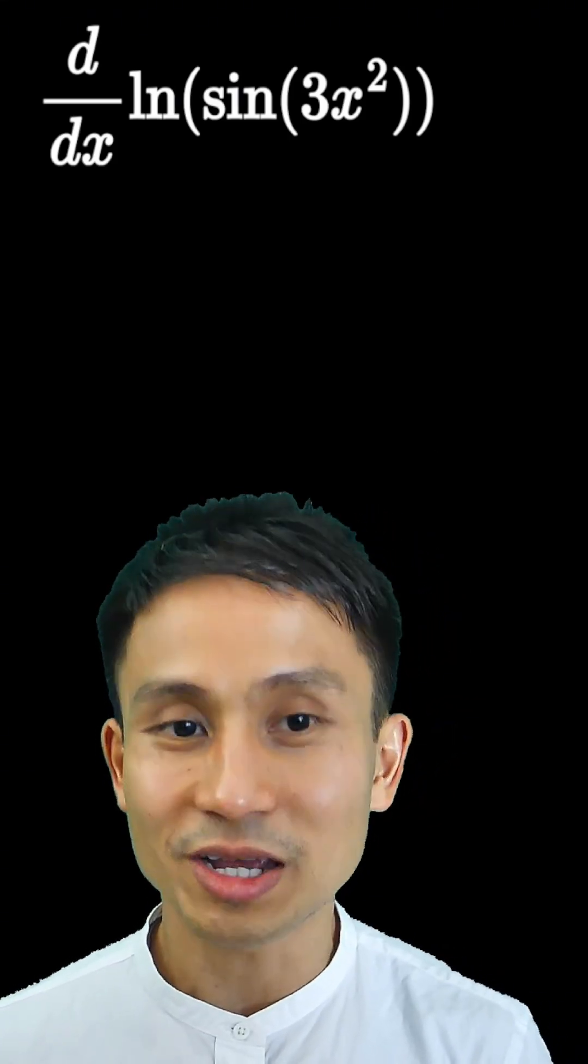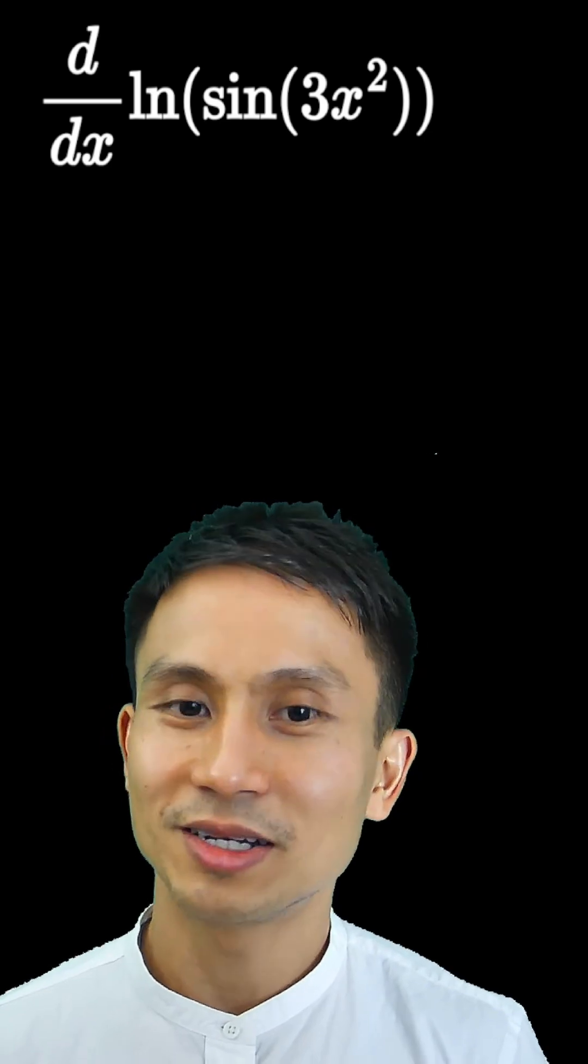How about this one? We have ln of sine of 3x squared. This is very nested.